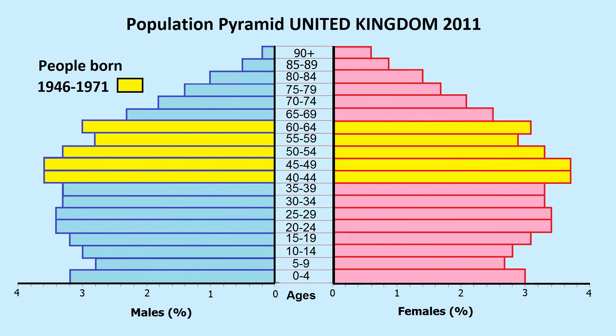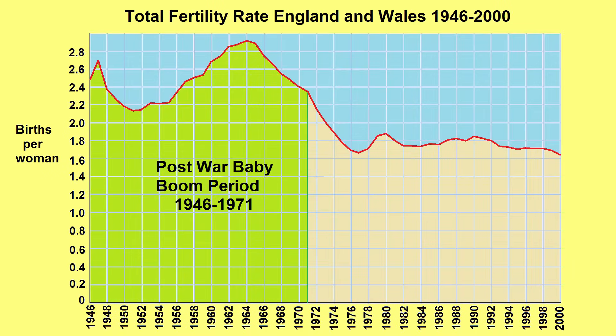Notice how in this pyramid for the United Kingdom there is a bulge in the area of certain age groups. This is related to the larger number of people born in the United Kingdom from 1946 to 1971, with the peak coming around 1947. We call this generation the baby boomers, because of the baby boom that followed the Second World War.